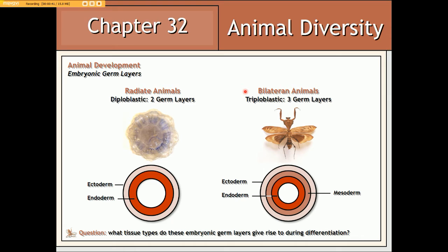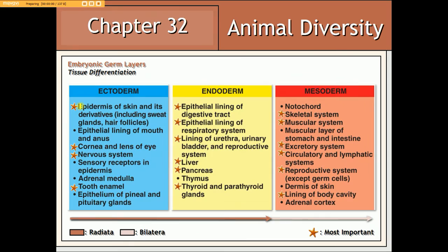Bilateran animals that are triploblastic will have more complex body plans as a result of the addition of the mesoderm germ layer. The question we want to address now is exactly what type of adult tissue each one of these germ layers gives rise to. The following table summarizes the developmental fates of the stem cells associated with the ectoderm, the endoderm, or the mesoderm germ cell layers.